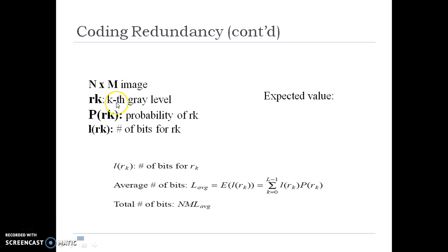Rk indicates the kth gray level, P(Rk) indicates the probability of that gray level, and L(Rk) is the number of bits used to represent that gray level.